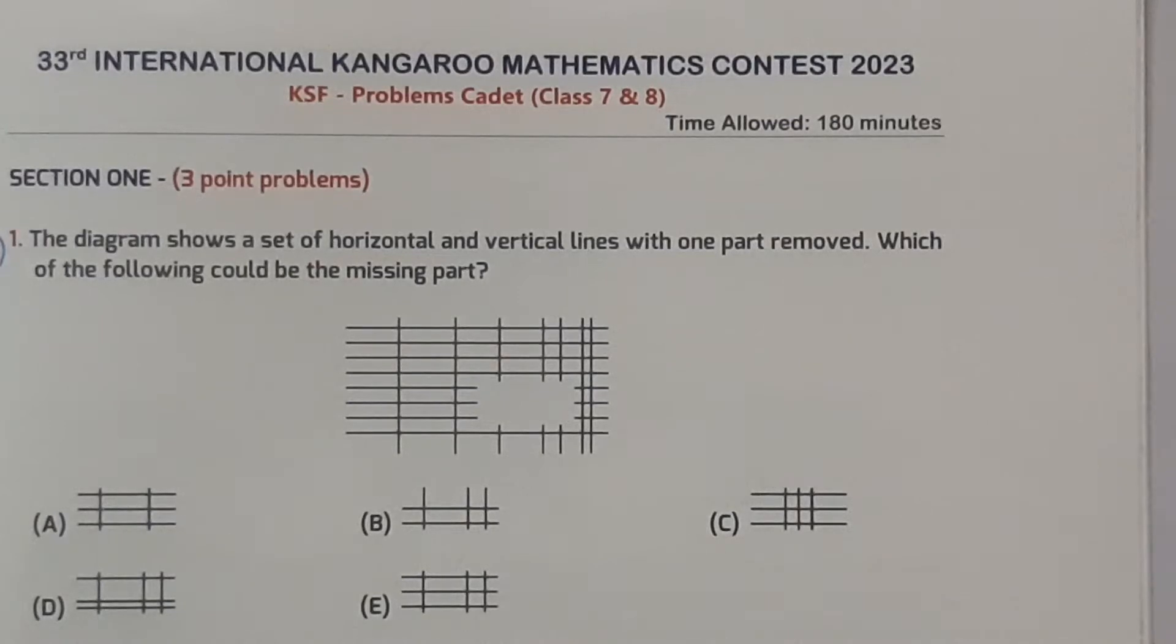So let's start the question. The diagram shows a set of horizontal and vertical lines with one part removed. Which of the following would be the missing part? They have given a figure and are saying that one part is removed. We have to find the missing part from five given parts.